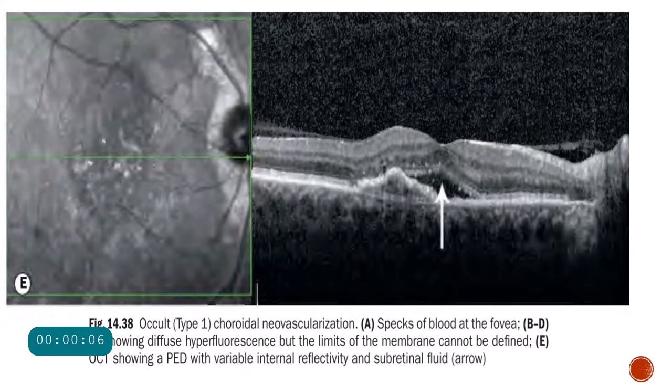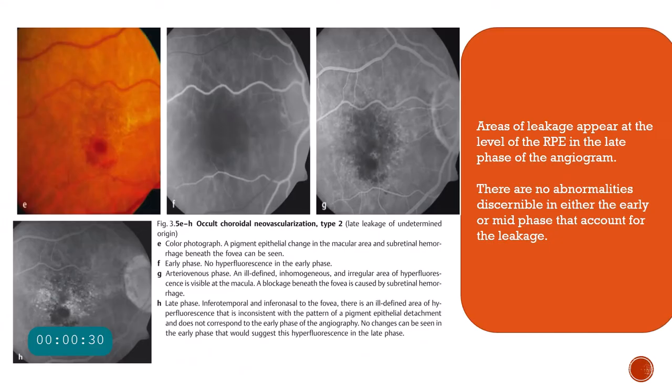The occult type of CNVM corresponds to type 1 CNVM on OCT, meaning it is a CNVM seen below the retinal pigment epithelium. On OCT, the RPE is thrown into a detachment with irregular borders, and there is a heterogeneous hyperreflective area below this RPE detachment along with subretinal fluid — this is showing you the type 1 or occult choroidal neovascular membrane.